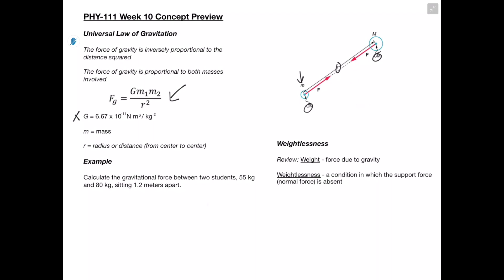We have a smaller mass and a larger mass, and we see that the gravitational force between them is going to be this attractive force. It's important to remember that this is a universal law, so it can apply to any two bodies within the universe — whether that be planets or two students — and we can calculate the actual gravitational forces between those two objects.